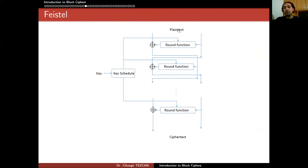The main idea for Feistel ciphers: you have the plaintext block and divide it into left and right parts. You have the key schedule algorithm providing round keys. In a single round, you take the right part and move it to become the left part. You also have the right part go through a round function — performing substitution and permutation to provide confusion and diffusion — and the output is XORed to the left part. The left part becomes the right part for the next round, so each round one half is unmodified and the other half is modified.